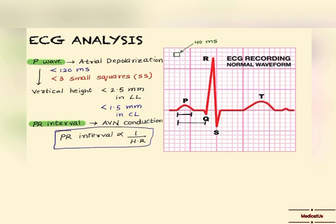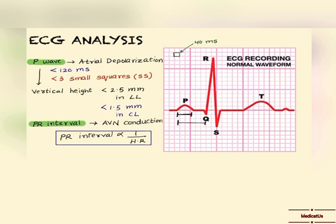If a patient is having tachycardia, the PR interval will be short because heart rate is high. And if a patient is having bradycardia, we will notice a prolonged PR interval. The PR interval should be between 120 to 200 milliseconds, that is three to five small squares.